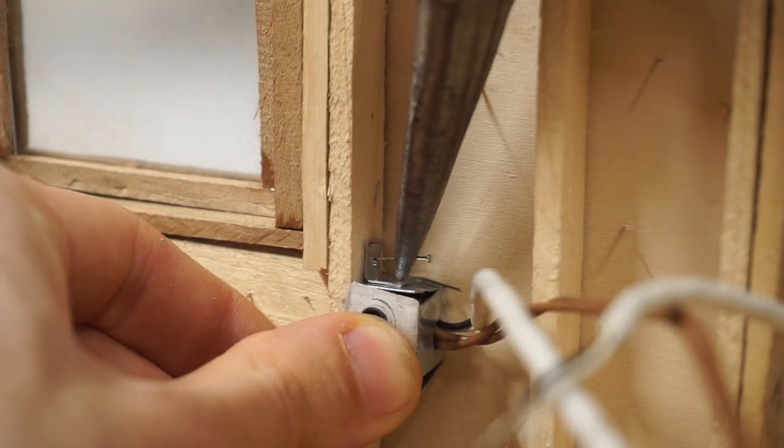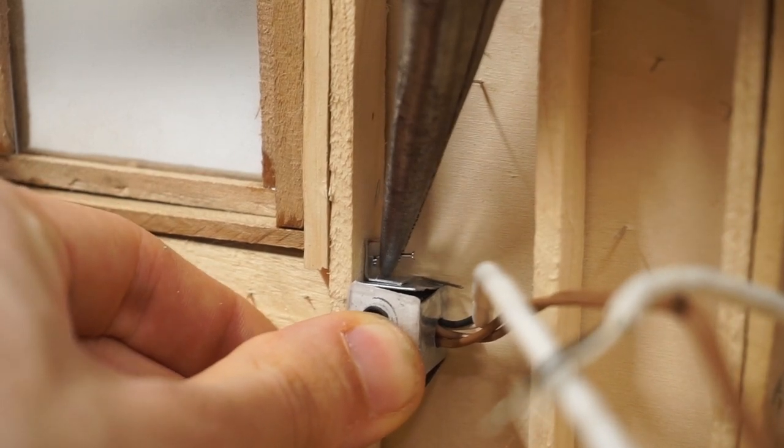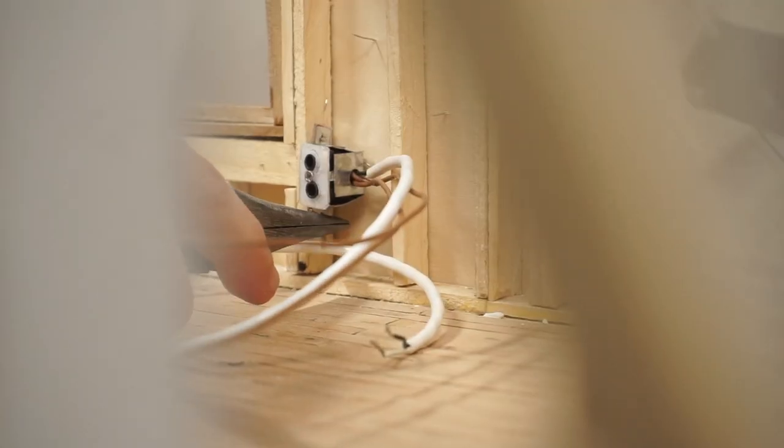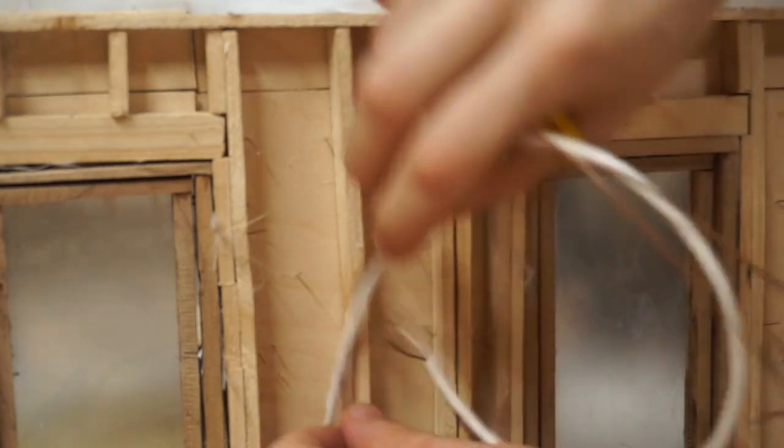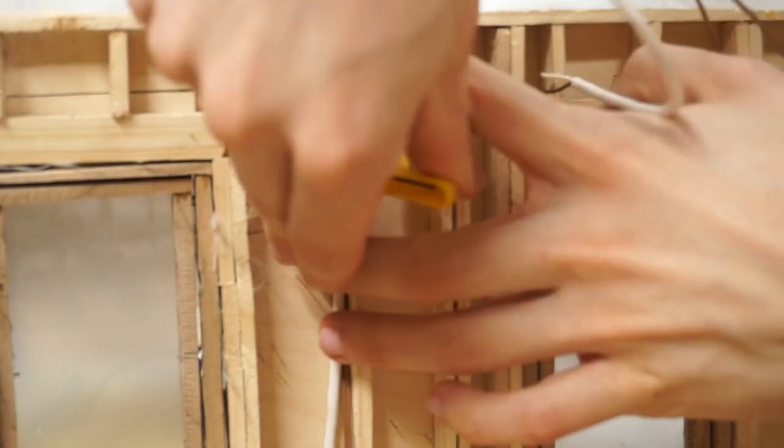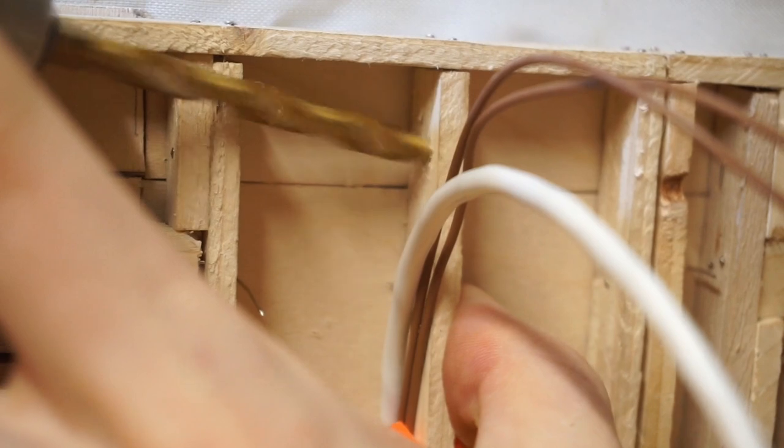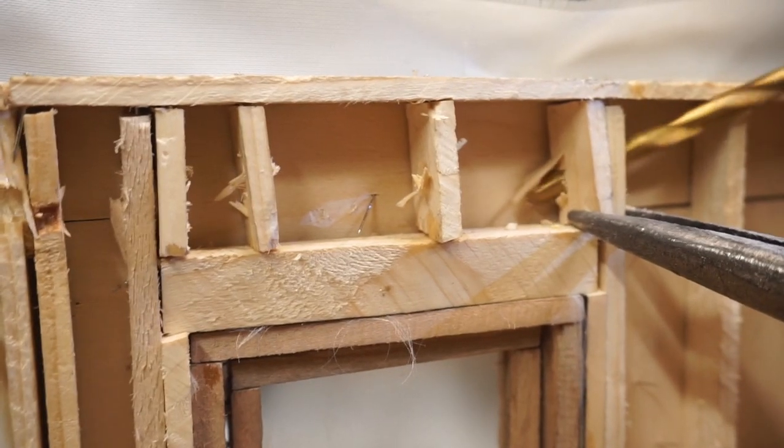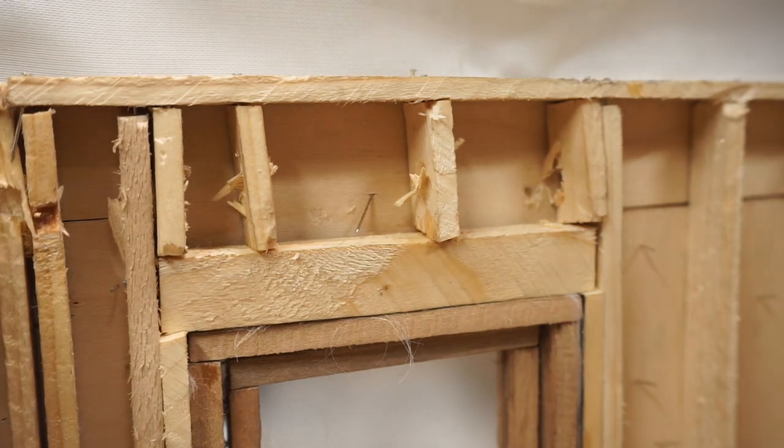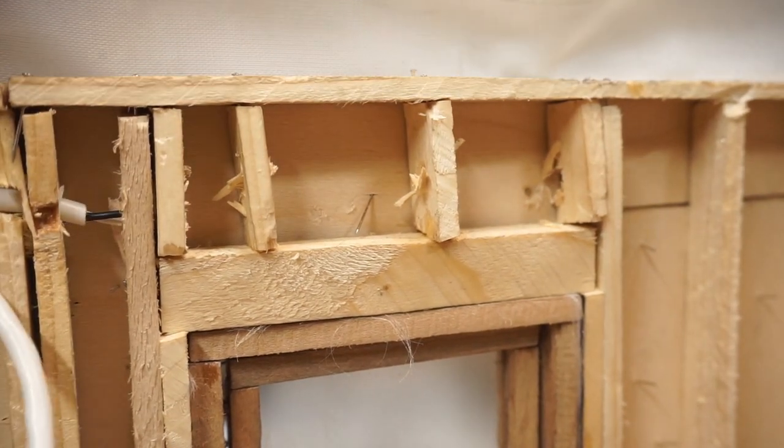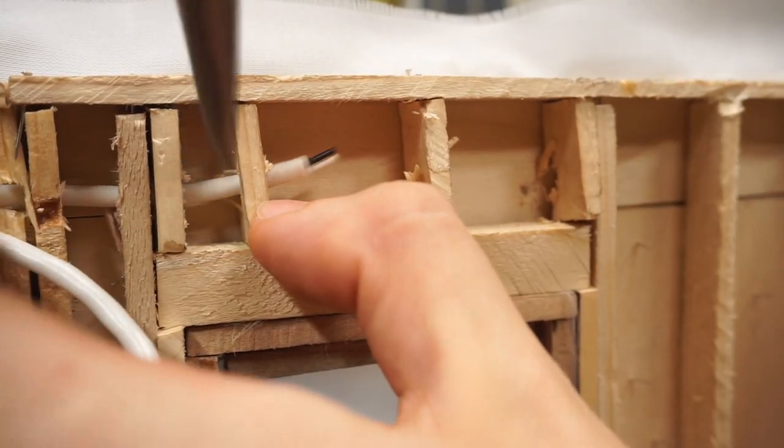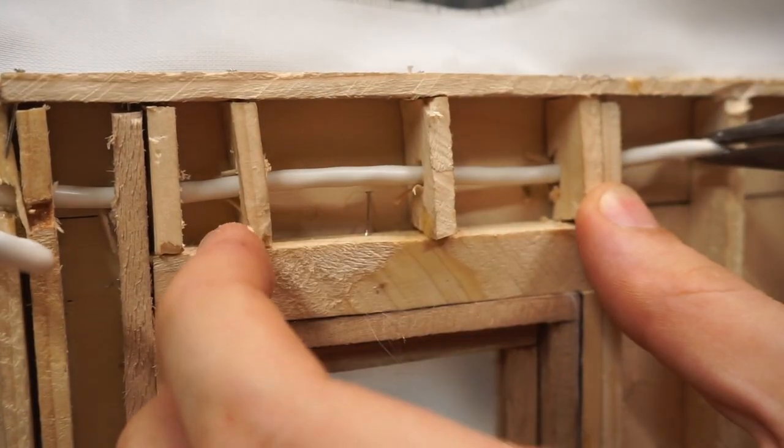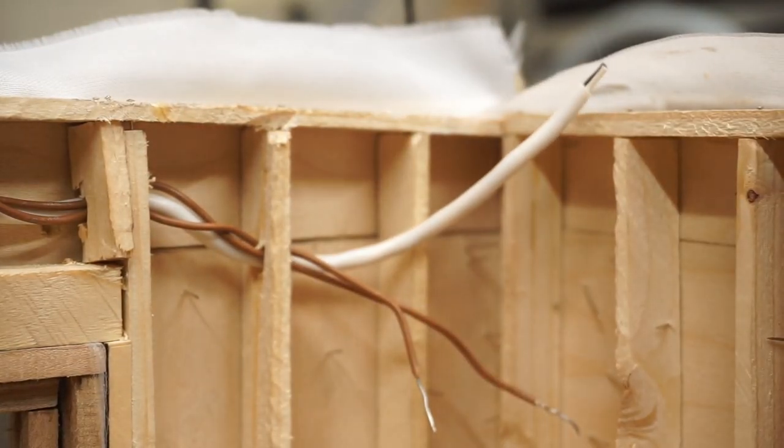I'll mount each electrical box right up against the stud. I'll drill a series of holes through the stud so that the wires can pass horizontally through the wall cavity.